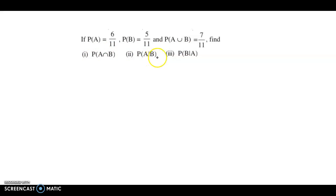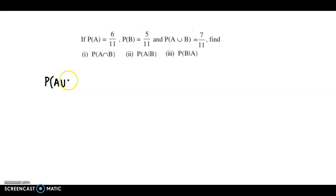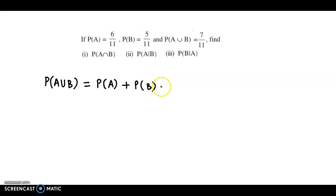We also need to find probability of A given B and probability of B given A. We can find probability of A intersection B using the addition theorem, or the addition formula. We know that probability of A union B is equal to probability of A plus probability of B minus probability of A intersection B.